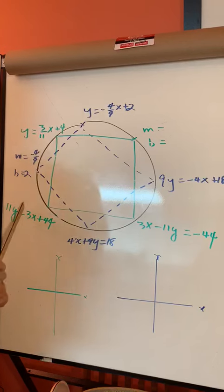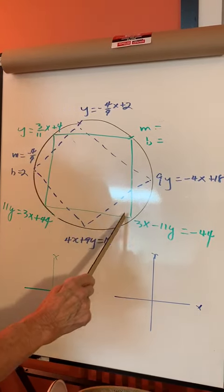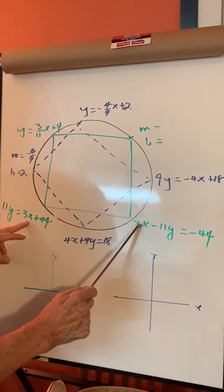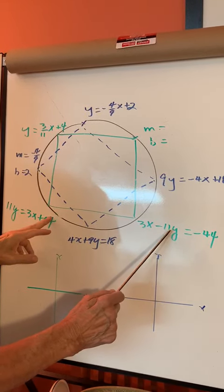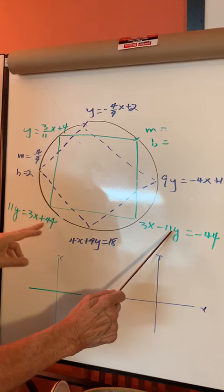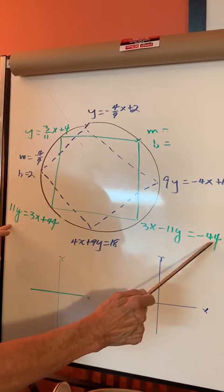Now from here I take it over here. I want the 3x to be positive, so I bring the 11y and move it over here. The 44 I don't want with the x, so I move it to the other side: minus 44.